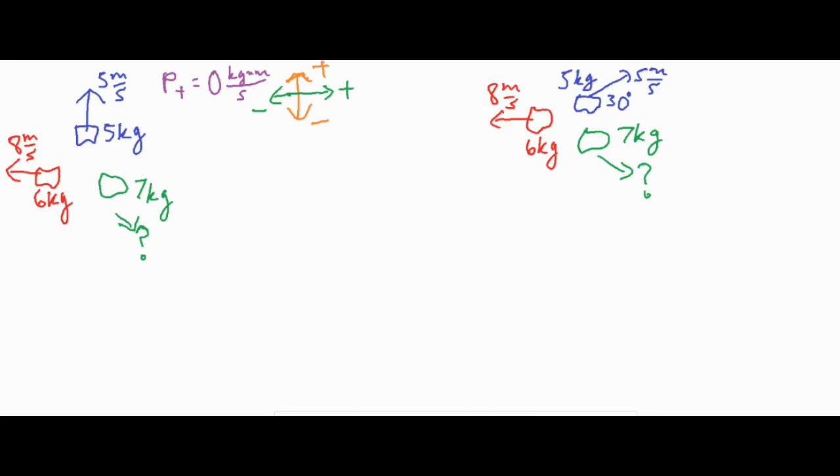So we're going to go ahead and analyze this first one. What we have is one object that's going upwards. If we just do a simple m times v, then it has a momentum upwards of 25 kilogram meters per second. And then to the left, I have 8 times 6, so we have 48 kilogram meters per second to the left. So we'll call this positive and this one negative.